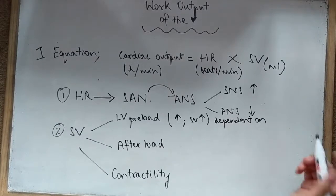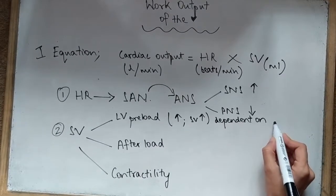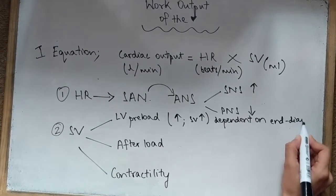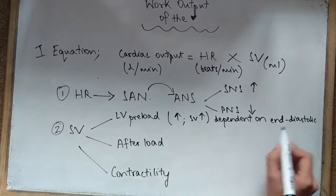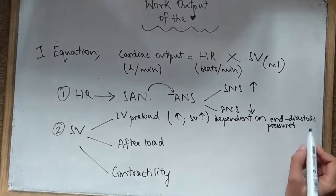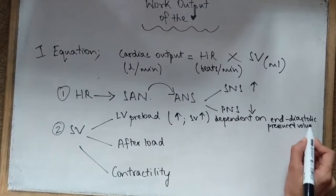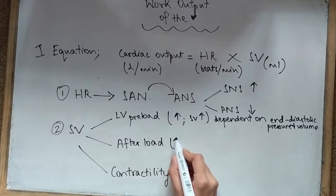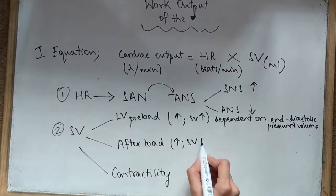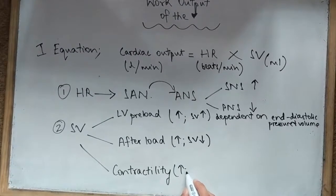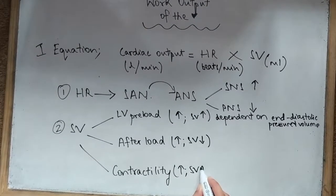If you increase the preload, the stroke volume increases—that's what's important—it's directly proportional, and it is dependent on the end-diastolic pressure and end-diastolic volume. Moving on to afterload, it is the aortic pressure or the arterial pressure. If this one increases, the stroke volume decreases, so it is inversely proportional.